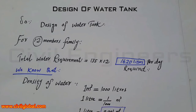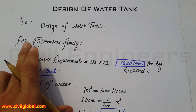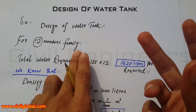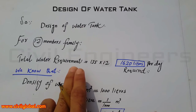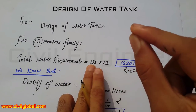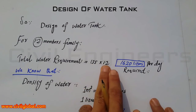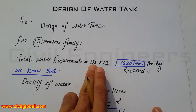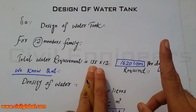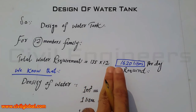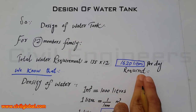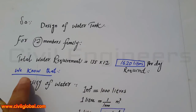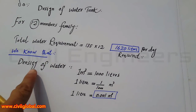Now, for a 12-member family, I have to find out the volume of the water tank. Total water requirement: 135 liters are required for one person per day, and there are 12 members in the family. So total water requirement is 135 × 12 = 1620 liters per day.